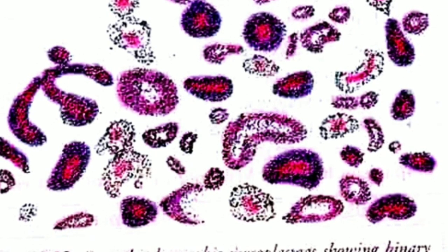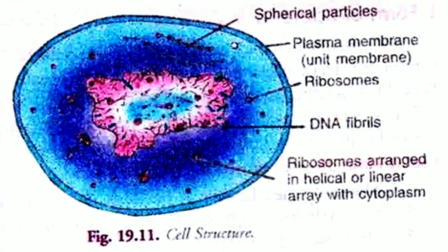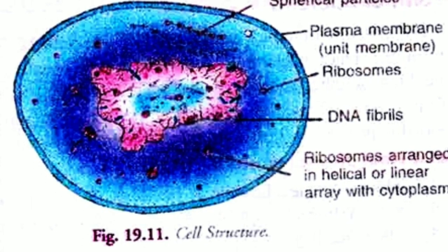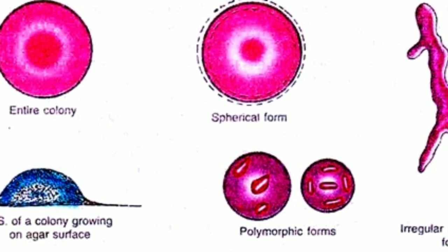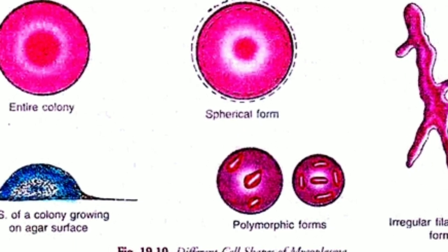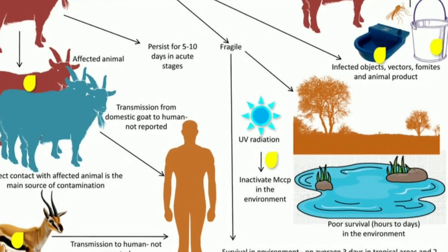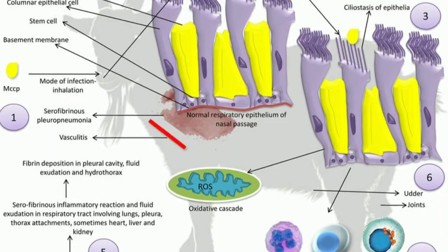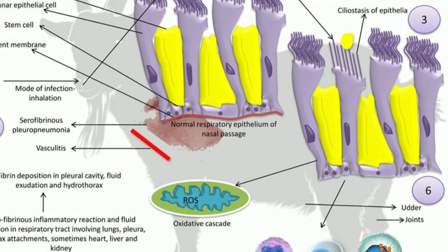Today we are studying about reproduction in mycoplasmas. In mycoplasmas, reproduction takes place by budding, binary fission, and also by filamentous growth. Cells of mycoplasma divide unevenly into very minute bodies called elementary bodies or minimal reproductive units. These are formed inside larger or mature cells and their size varies from 330 nanometers to 450 nanometers. These bodies are the smallest independent living entities so far known.